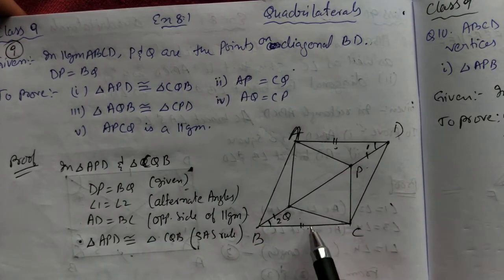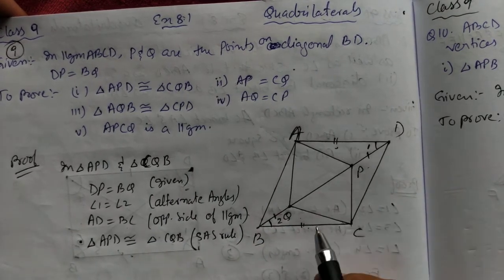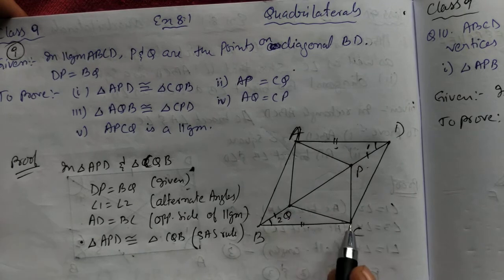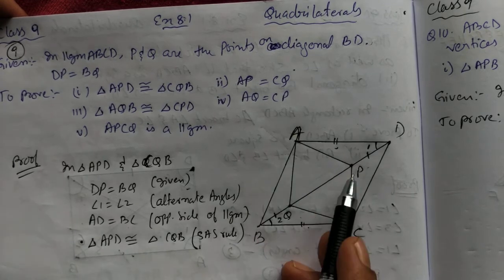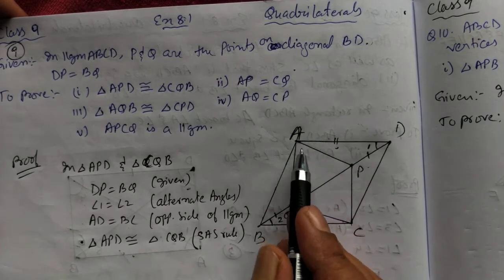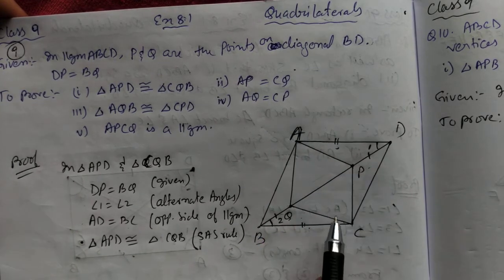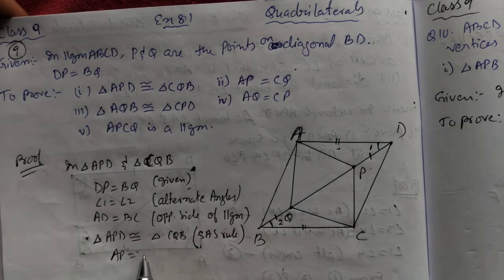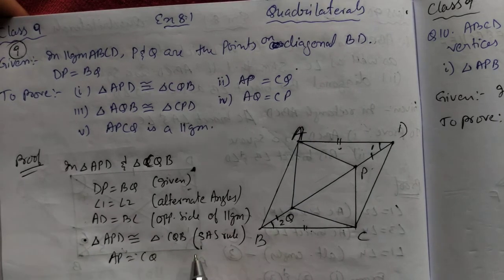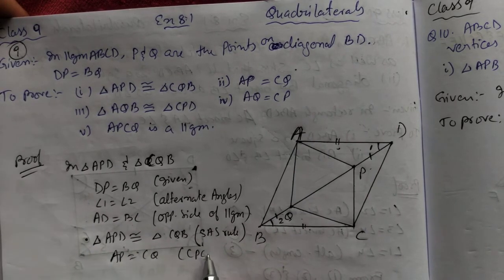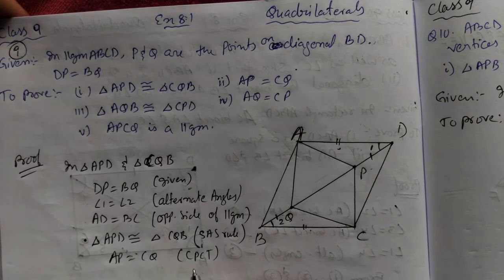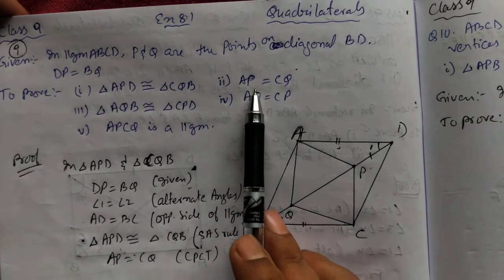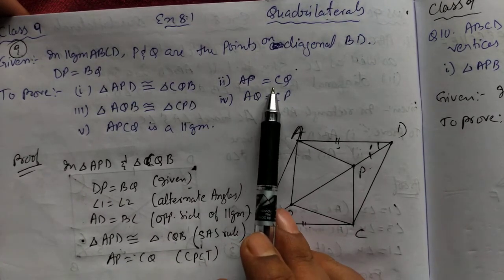If these two triangles are congruent, we can say that these two sides also will be same. AP equal to CQ, because this is a part of this triangle. So we can write AP equal to CQ. Reason is CPCT — corresponding part of congruent triangle. So the second proof is also done.